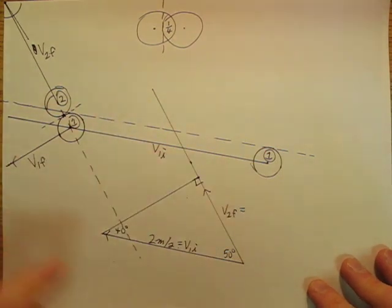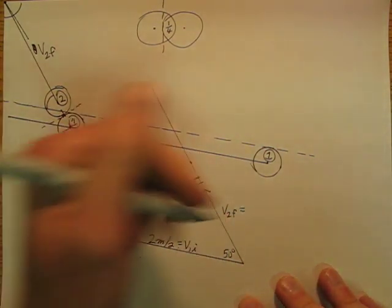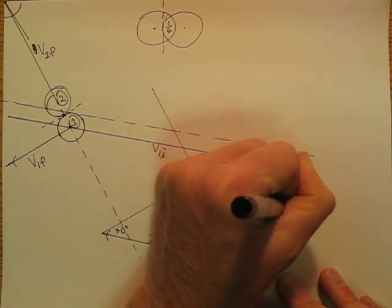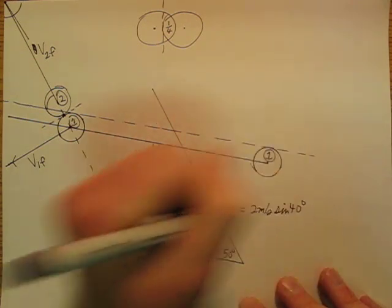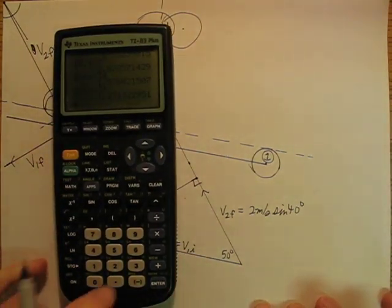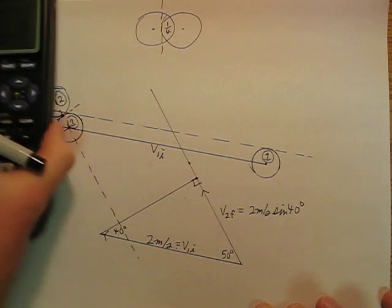So V2F is going to be, oh, why don't we say, 2 meters per second sine 40 degrees. 2 times sine 40 degrees, it's going to be 1.3 meters per second.